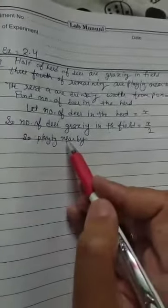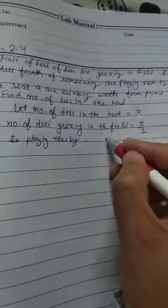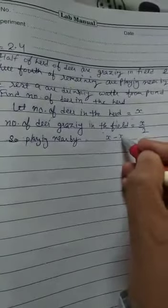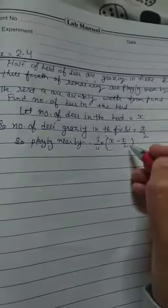Now playing nearby, that is three-fourths of the remaining. Now first of all what will be the remaining? x minus x upon 2. So it's 3 upon 4. They are playing nearby.